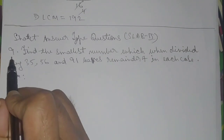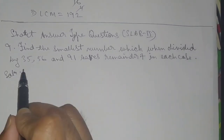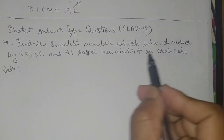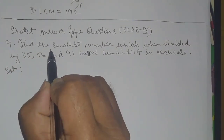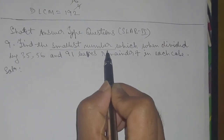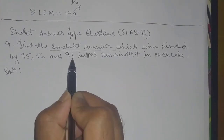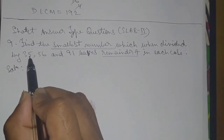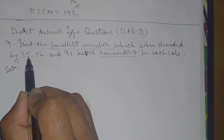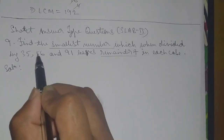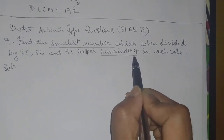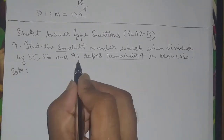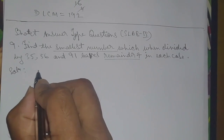Short answer type questions, question number 9: find the smallest number which when divided by 35, 56 and 91 leaves remainder 7 in each case. We need to find the smallest number such that when divided by 35, 56 and 91, the remainder is 7 in each case.